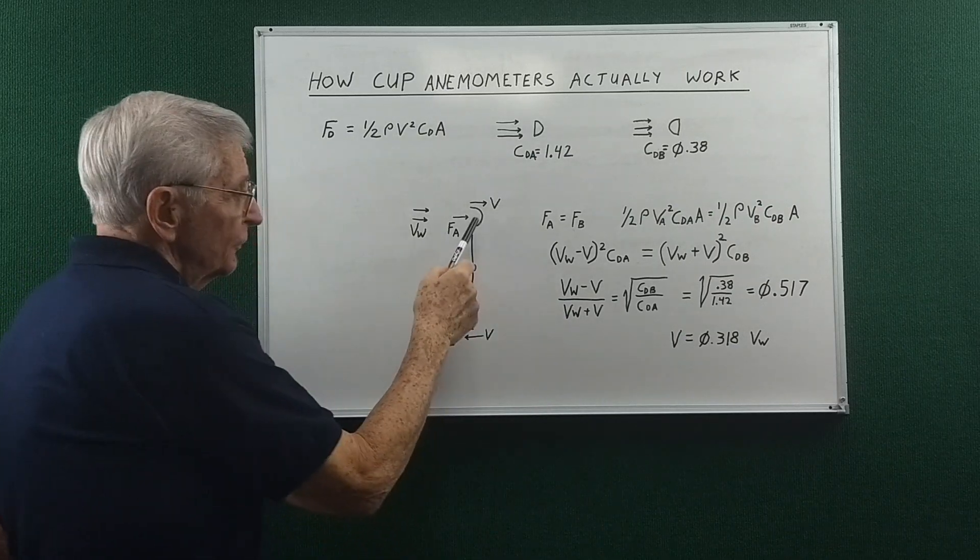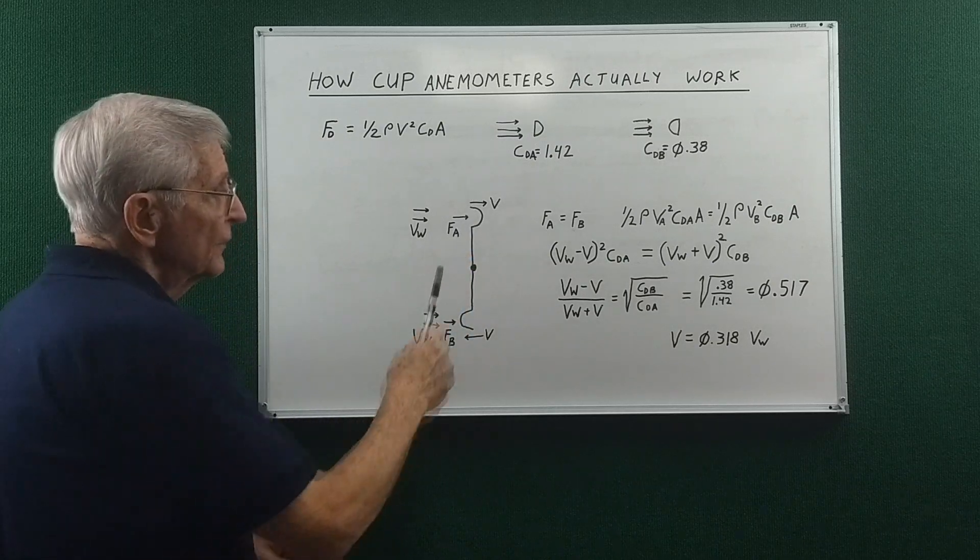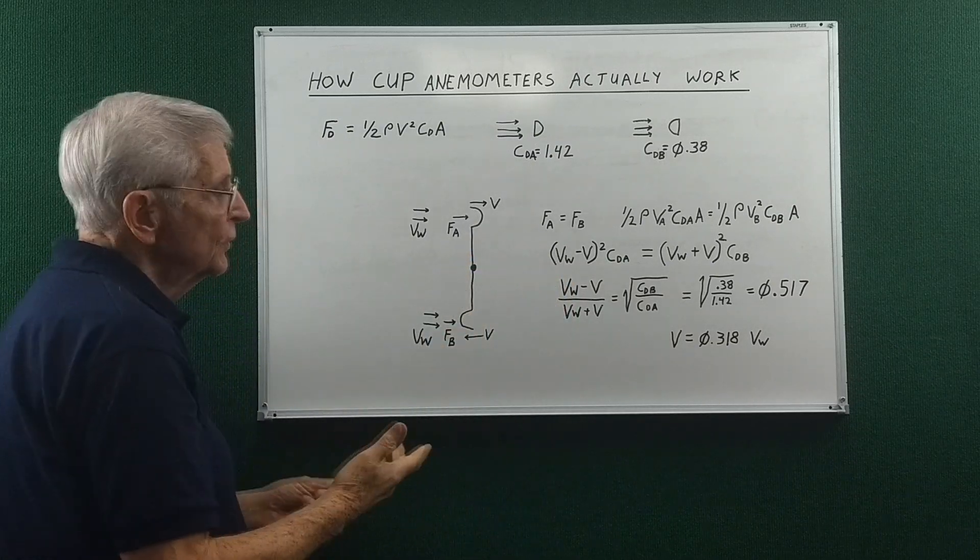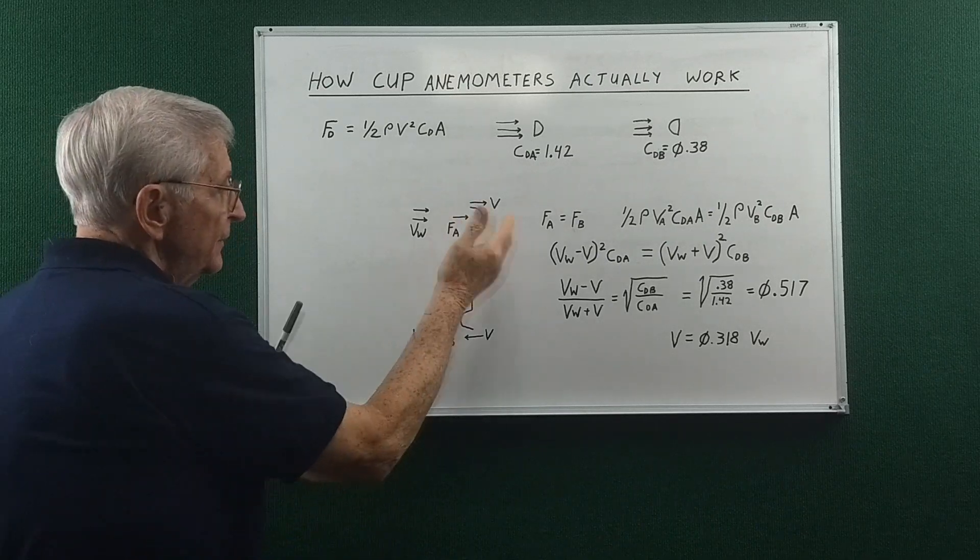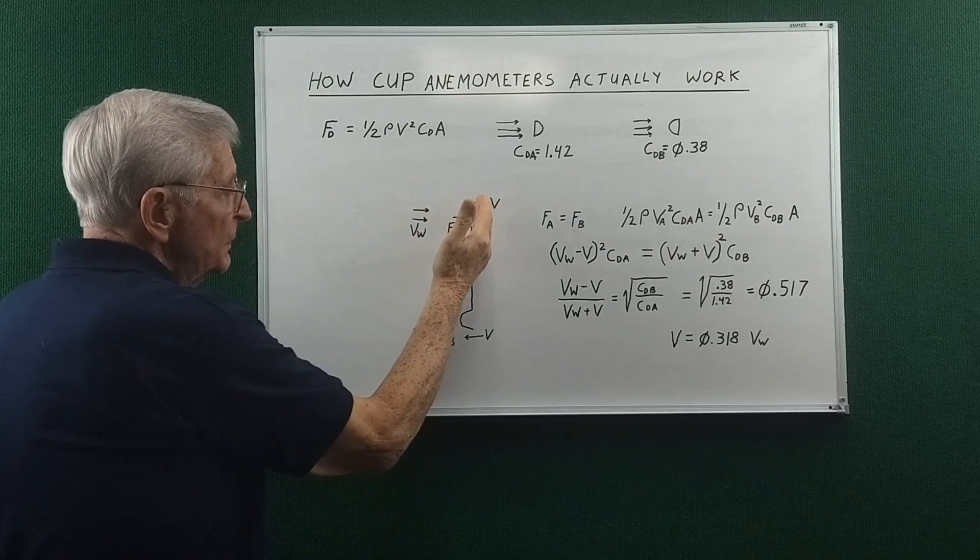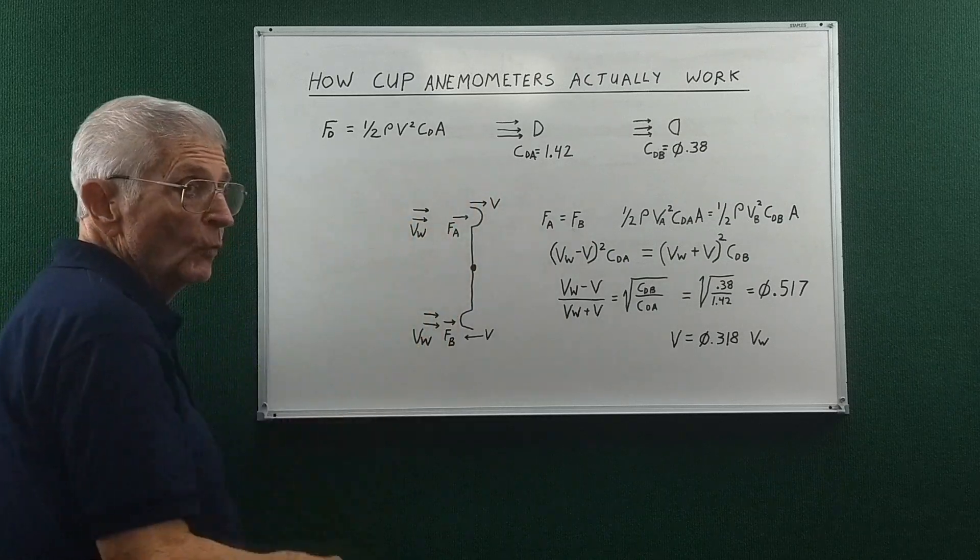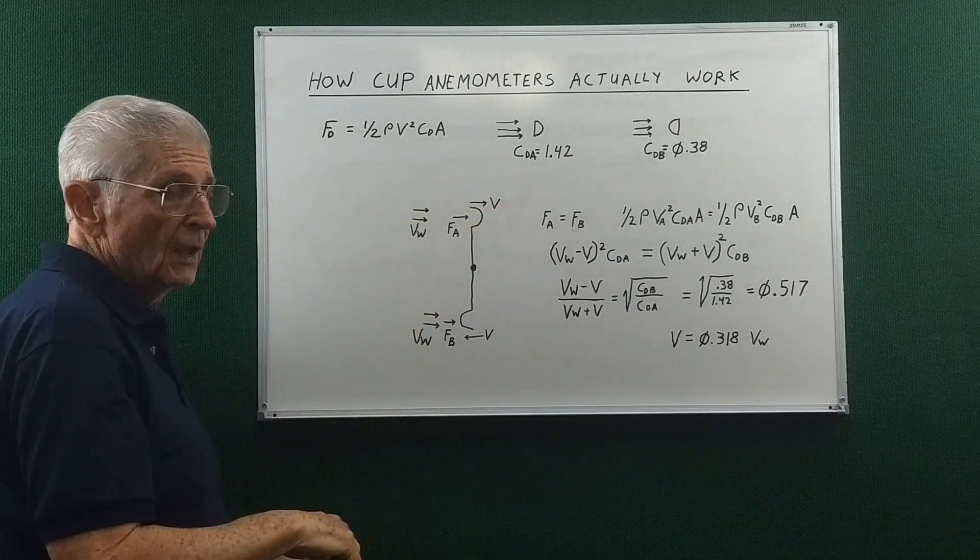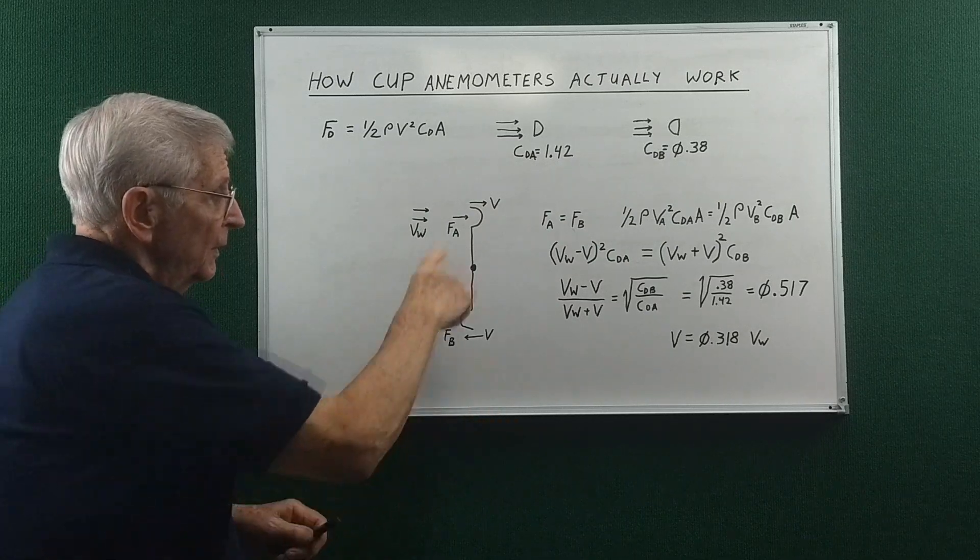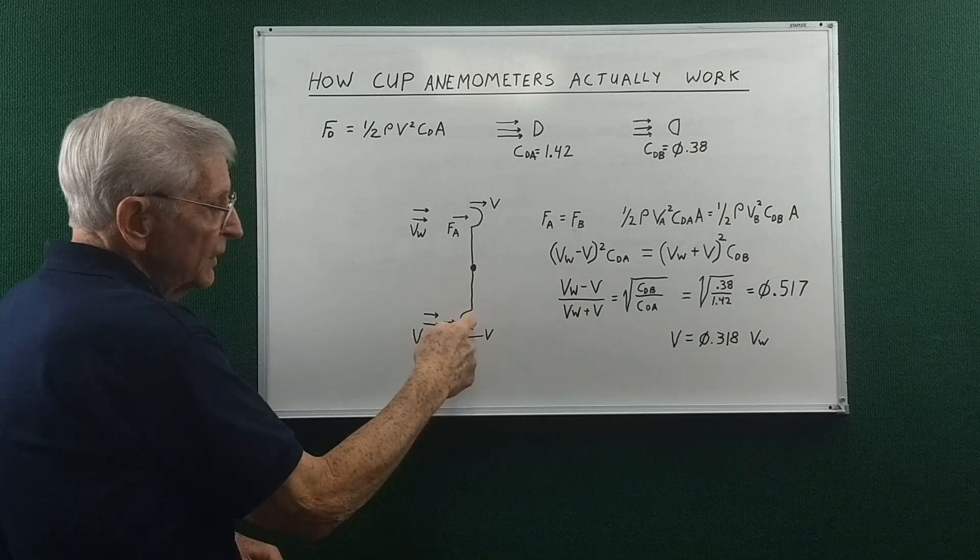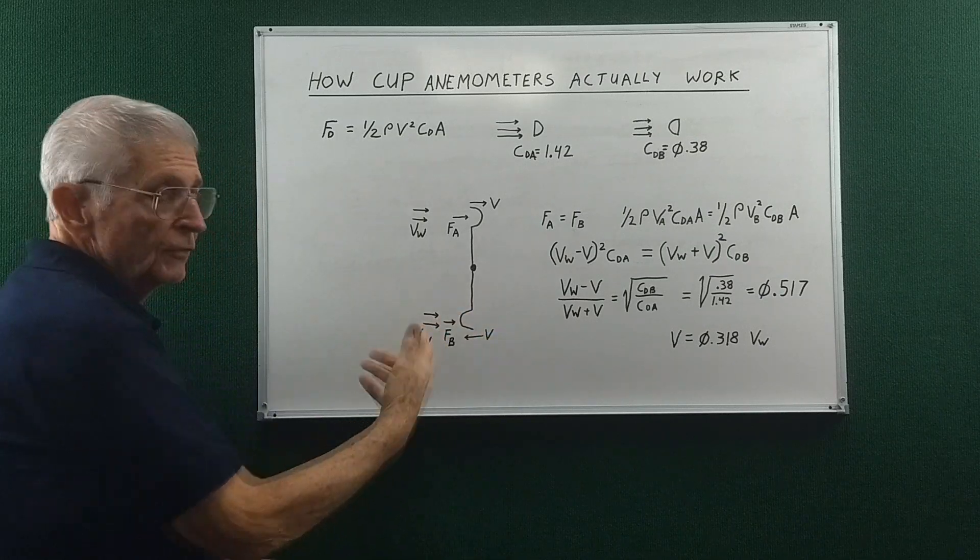Now if the cup is moving at the same speed as the wind, there's no force on it. There has to be a difference between the speed of the cup and the speed of the wind to get a force on that cup. Now why do we need a force on the cup? Well, in order to drive this cup back into the wind.